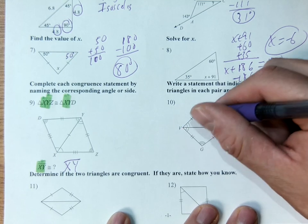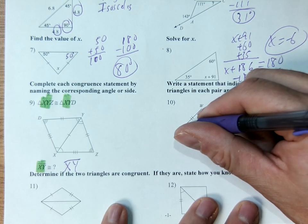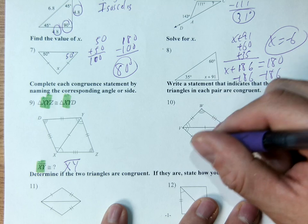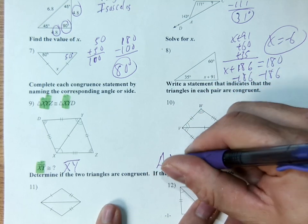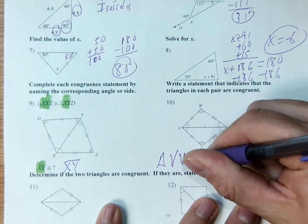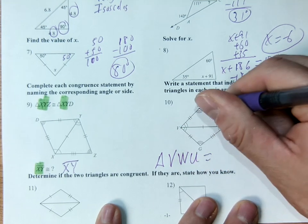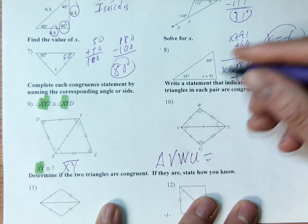Same thing on number 10. Start with one of the triangles, either the top or the bottom. So let's talk about the top triangle. V, W, U. Or U, V, W. You could say any order you want.